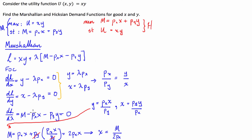If you do exactly the same but substitute X in and solve in terms of Y, you're going to get Y equals M over 2·PY. These are our uncompensated Marshallian demand functions for X and Y. As you'd expect from Marshallian demand, which maximises utility subject to a budget constraint, the demand functions are expressed in terms of income and prices. In Hicksian demand, by contrast, the demand for X and Y will be in terms of utility and prices.